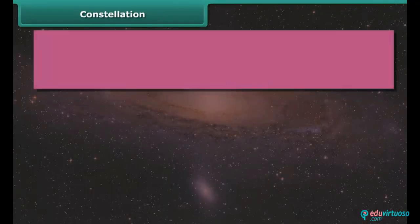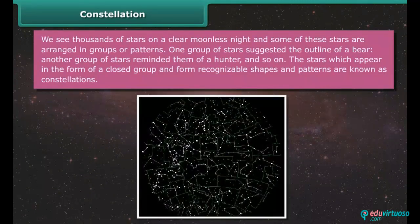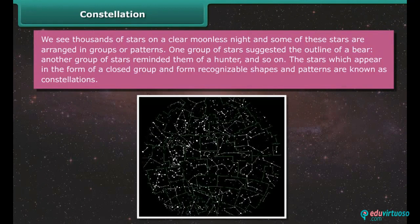Constellation. We see thousands of stars on a clear moonless night and some of these stars are arranged in groups or patterns. One group of stars suggested the outline of a bear, another group of stars reminded them of a hunter, and so on. The stars which appear in the form of a closed group and form recognizable shapes and patterns are known as constellations.